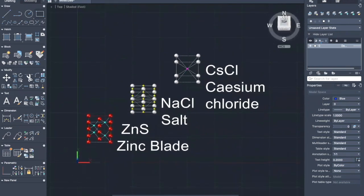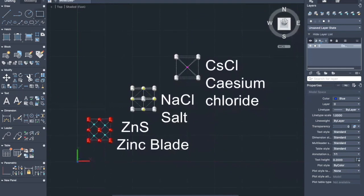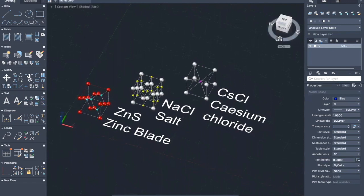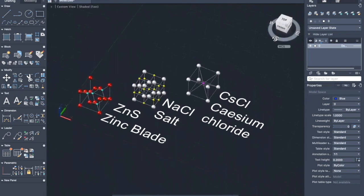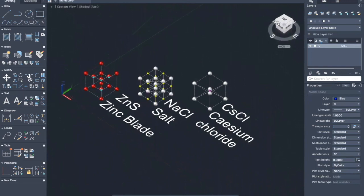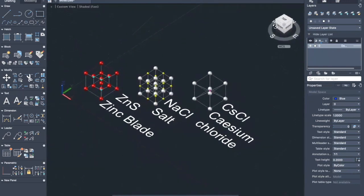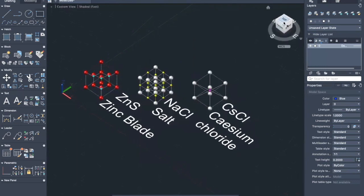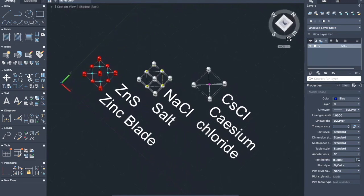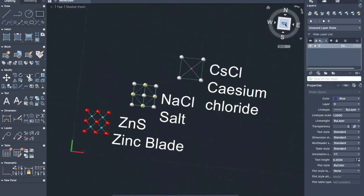There are eight tetrahedral voids and four octahedral voids present. The S2- ions are present in the corners of the cube and at each center of each face. The zinc ions are present in the alternative tetrahedral voids. Each zinc ion is surrounded tetrahedrally by four sulfur ions, and each sulfur ion is surrounded by four zinc ions. Thus, the structure has a 4 by 4 coordination.